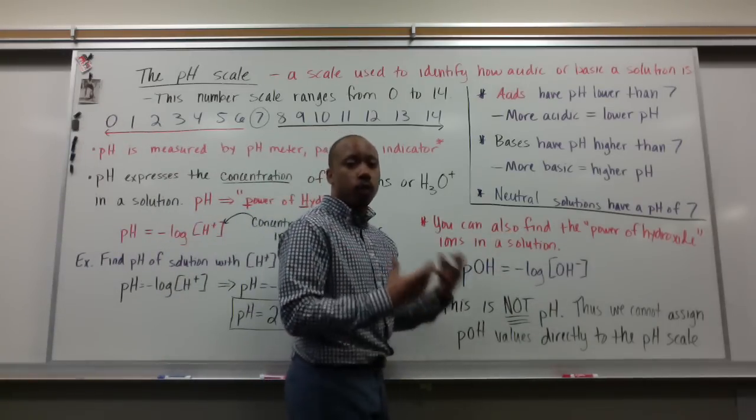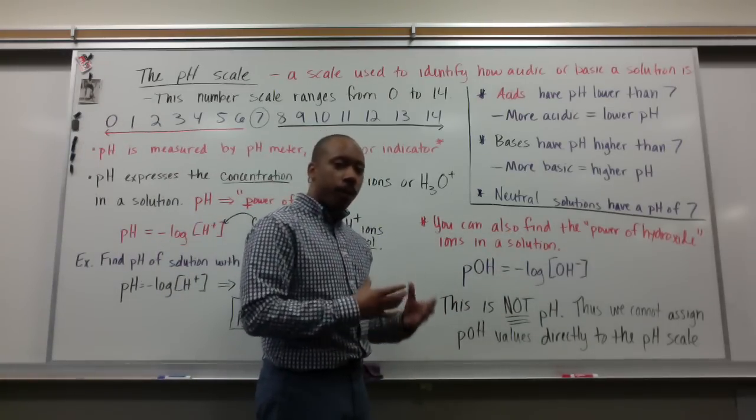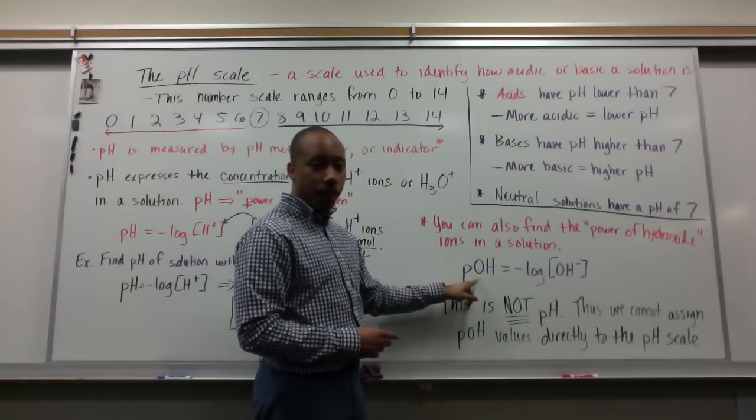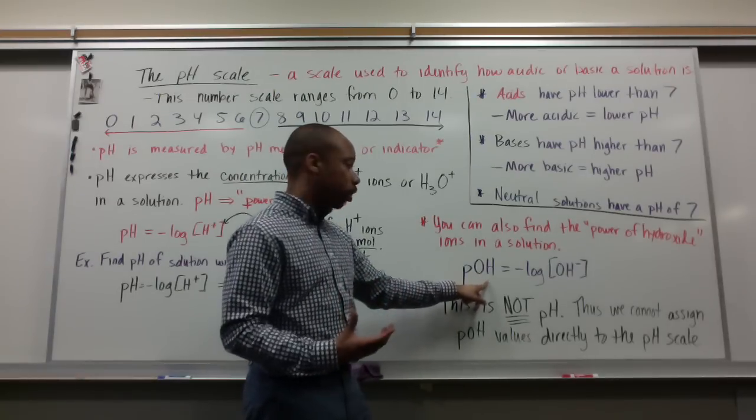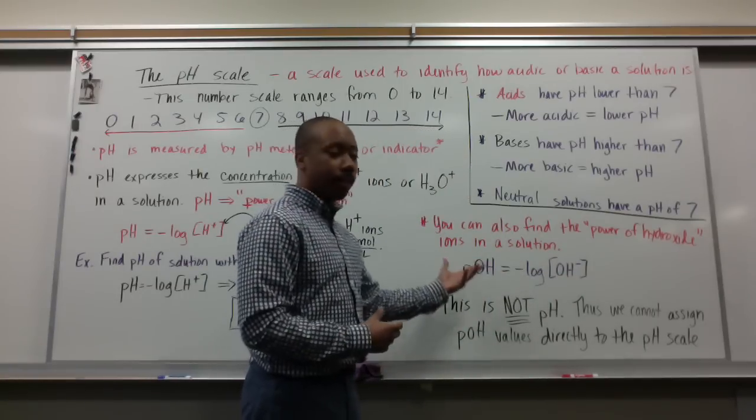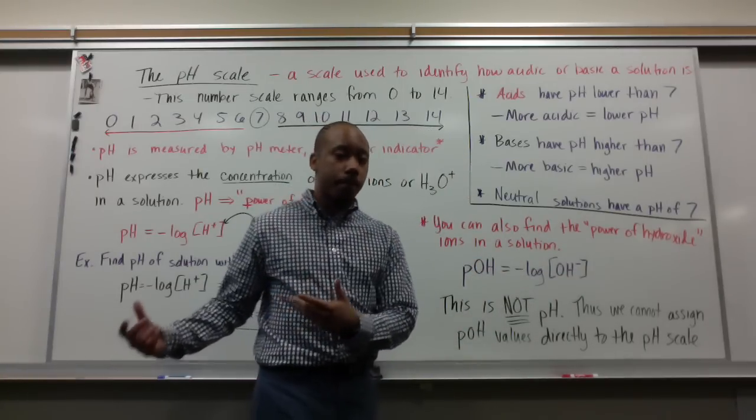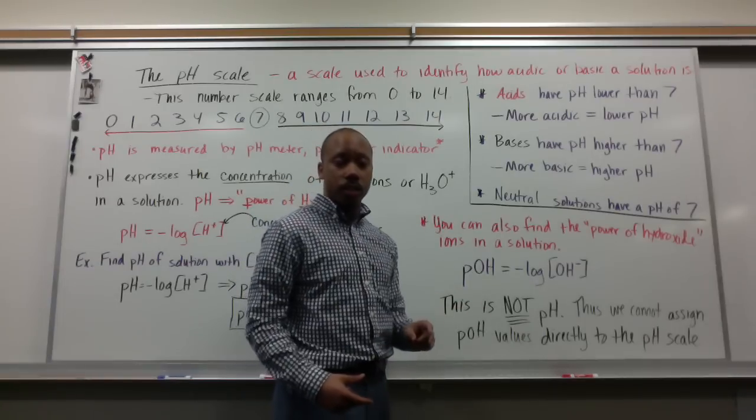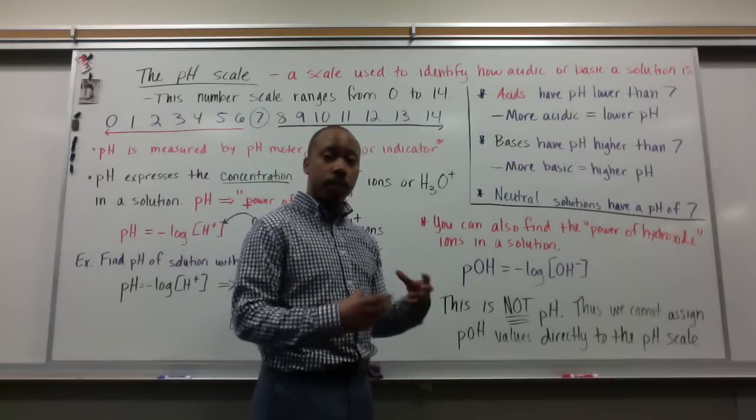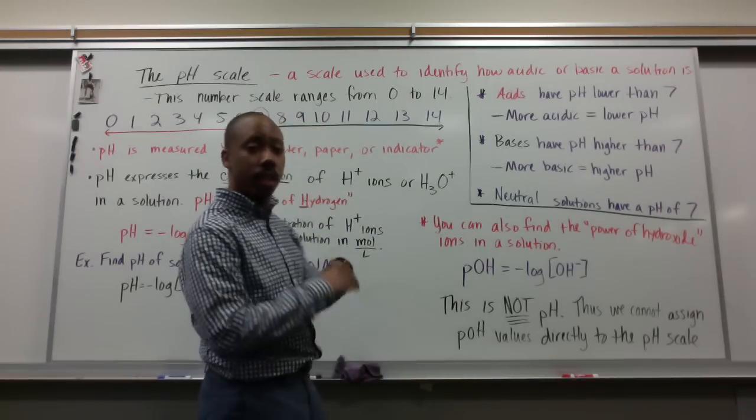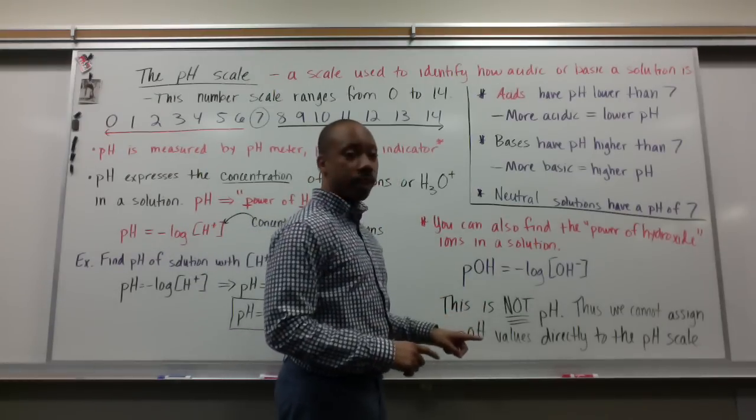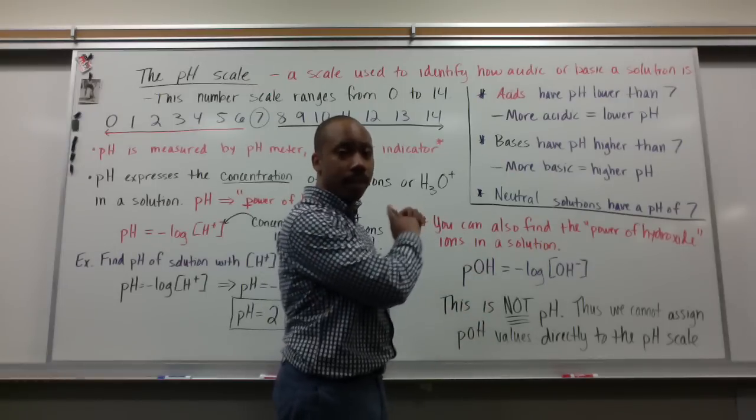You can also find the power of hydroxide, called pOH. The pOH is the power of hydroxide ions in solution, calculated as the negative log of hydroxide ions. This is not pH, so we do not use the pH scale when talking about pOH. It doesn't work the same way.